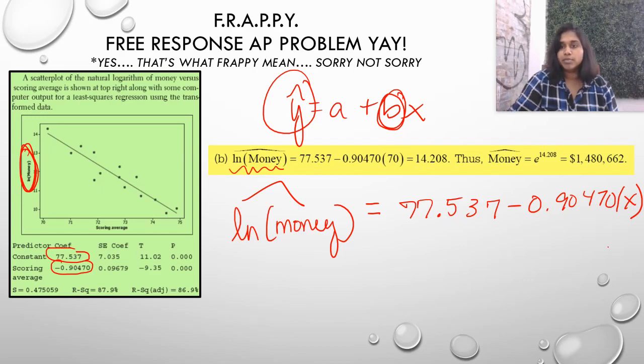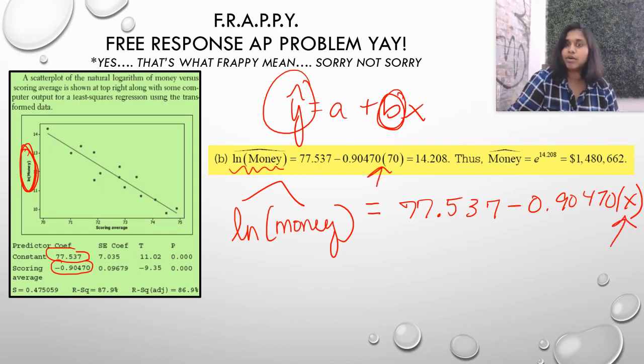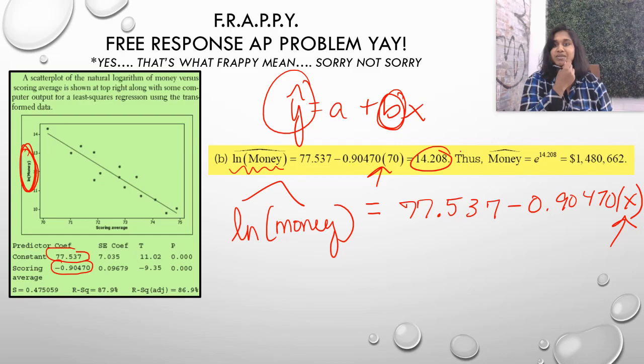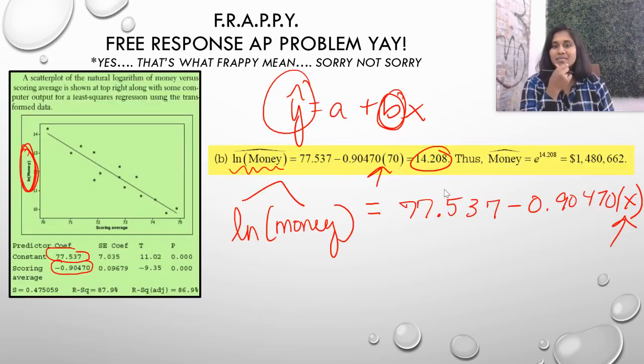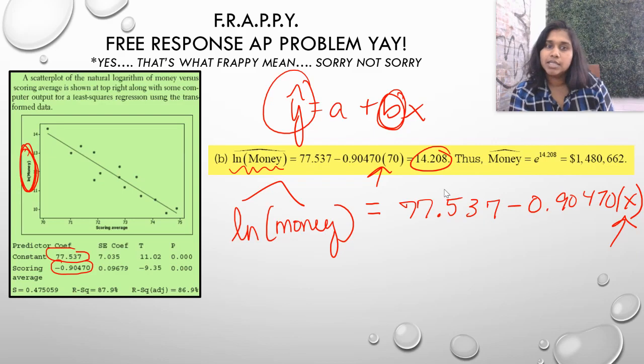And that would be our formula. Now, we plug that in. You plug in 70 here and they've done that for us. You get a value of 14.208. But that's not quite the answer they're looking for. What did they want? What would be the amount of money won. 14.208 is not the amount of money. That's the amount of natural log of money. So, you've got to finish that solve.